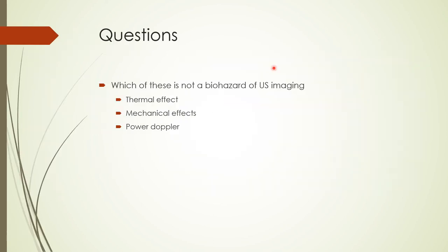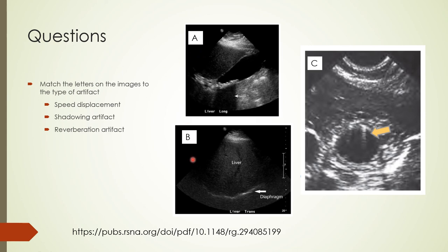Here is a review question: Which of these is not a biohazard of ultrasound imaging? The correct answer is power Doppler — the two biohazards mentioned are thermal effects and mechanical effects. A second question asks you to match image labels to artifact types: B corresponds to speed displacement, A to shadowing, and C to reverberation. Thank you for watching this presentation.